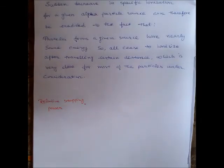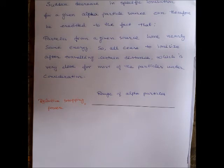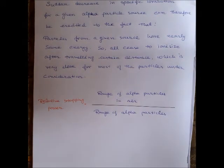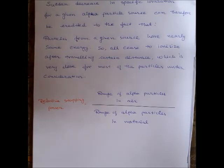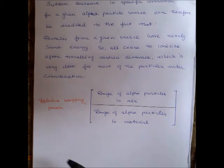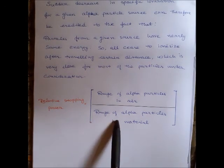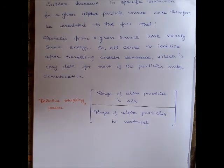Relative stopping power equals the range of alpha particles in air divided by the range of alpha particles in the material under consideration. Therefore, the higher the relative stopping power, the thinner the material required to stop the ionization, which we can see from some examples.